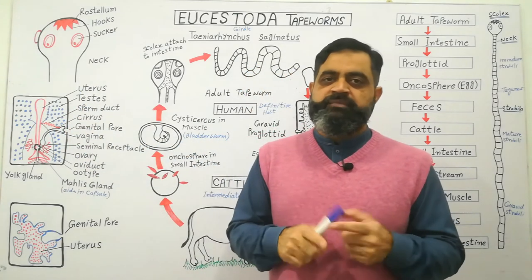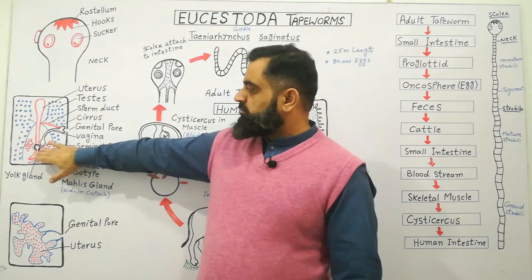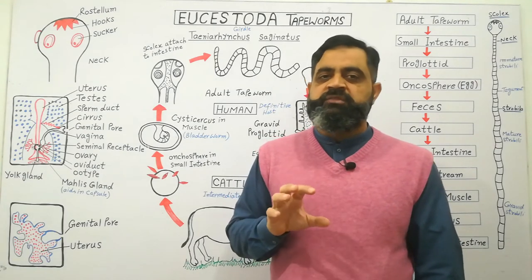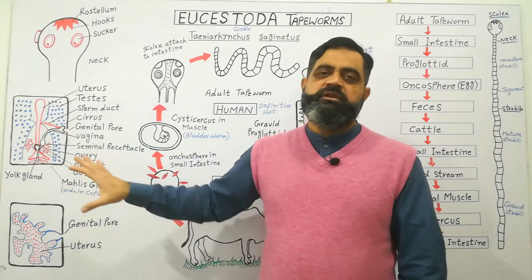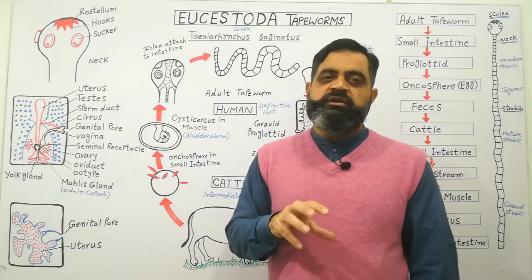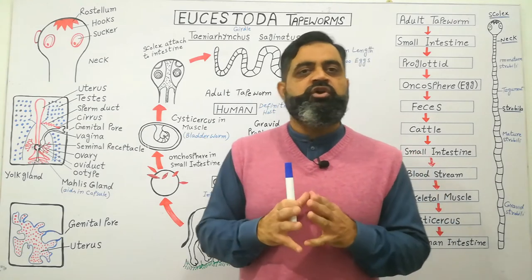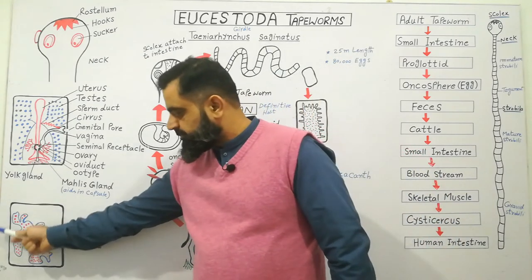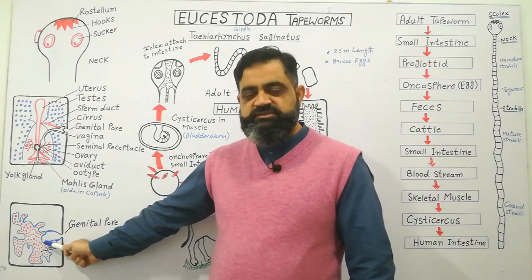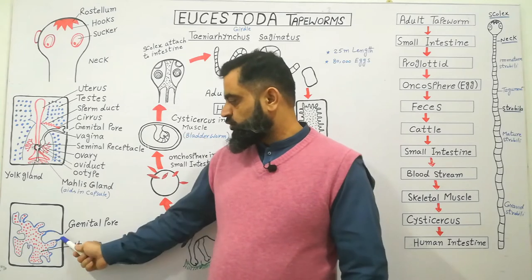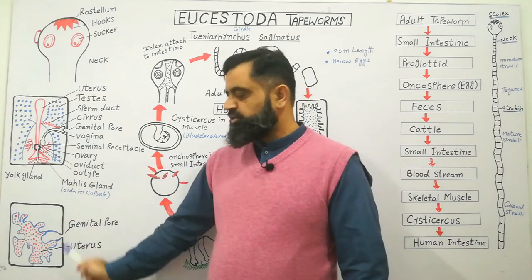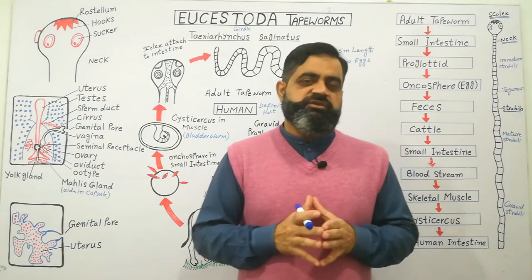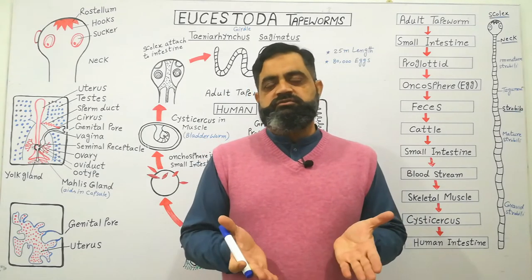The uterus is blind-ended. Once eggs are mature, encapsulated, and stored in the uterus, the number of eggs is typically around 80,000. Then the reproductive organs of both male and female degenerate, and the whole proglottid contains only a uterus full of eggs. This proglottid is known as the gravid proglottid — meaning full of eggs — with an opening known as the genital pore.